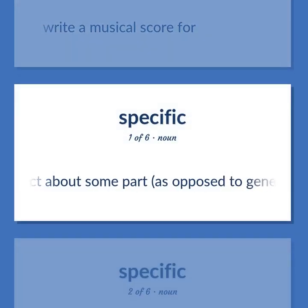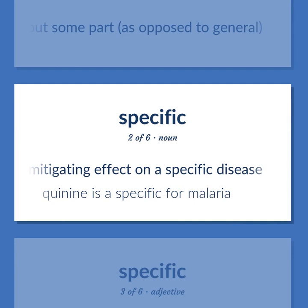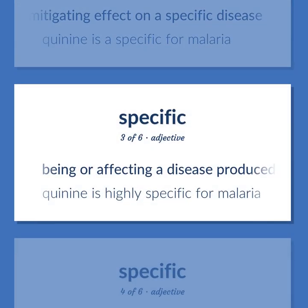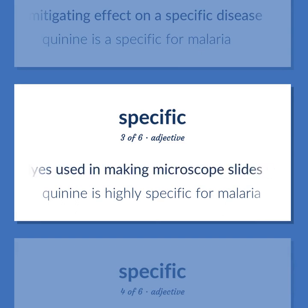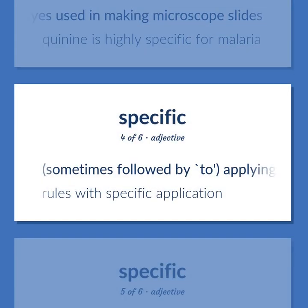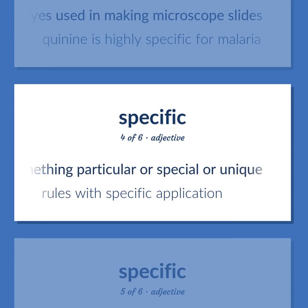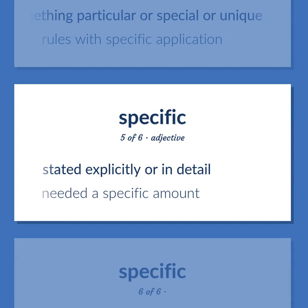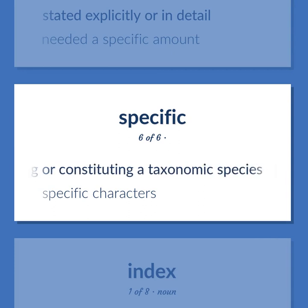Specific: A fact about some part, as opposed to general. A medicine that has a mitigating effect on a specific disease — quinine is a specific for malaria. Being or affecting a disease produced by a particular microorganism or condition, used also of stains or dyes used in making microscope slides — quinine is highly specific for malaria. Sometimes followed by 'to': applying to, or characterized by, or distinguishing something particular or special or unique — rules with specific application. Stated explicitly or in detail — needed a specific amount. Relating to or distinguishing or constituting a taxonomic species — specific characters.